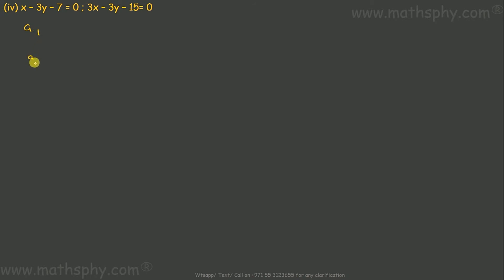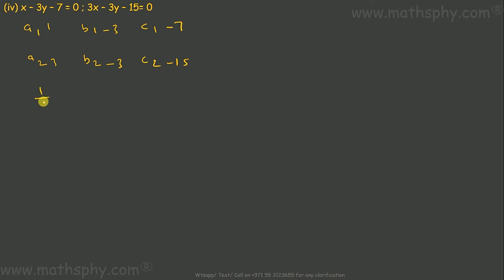This one here: A1 is 1, A2 is 3, B1 is negative 3, B2 is negative 3, C1 is negative 7, C2 is negative 15. A1/A2 = 1/3, B1/B2 = negative 3 over negative 3 = 1. These are not equal, so A1/A2 ≠ B1/B2, giving a unique solution. Let's find it.